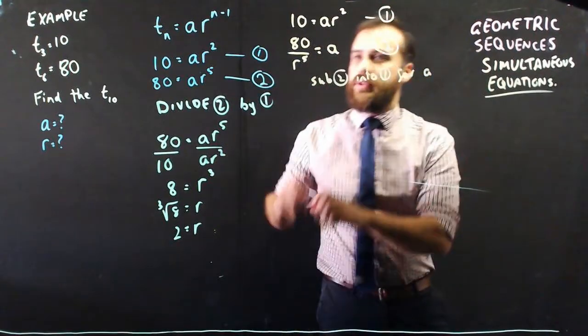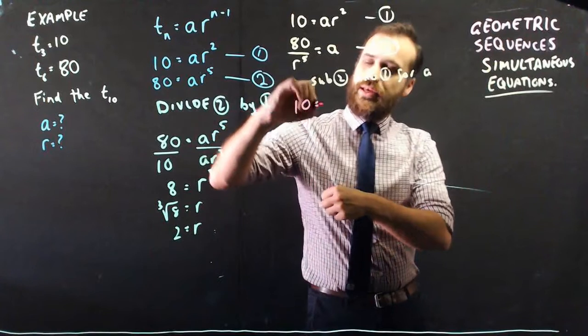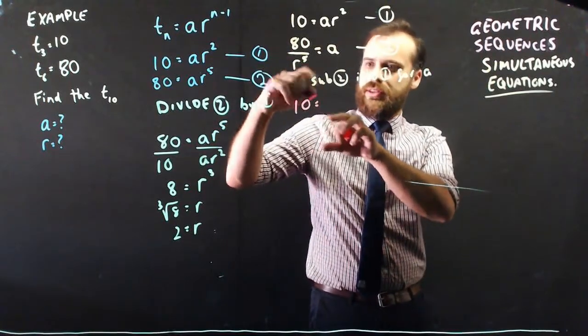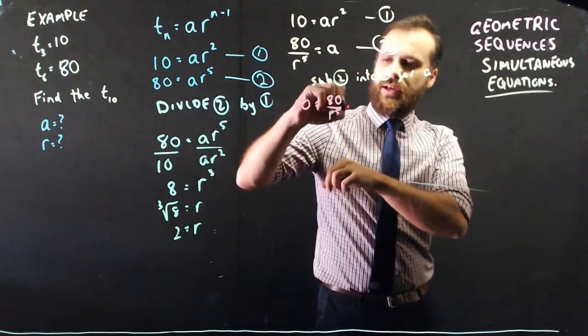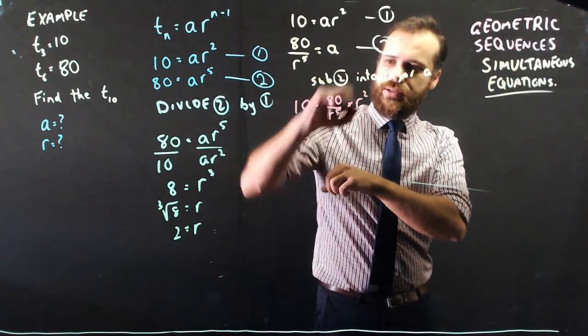10 equals, substituting that in, we get 80 over r to the 5, and then multiplied by r squared.